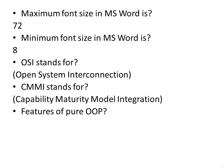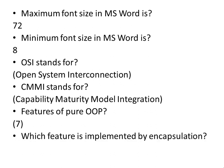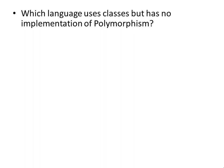Features of Pure OOP — there are 7 features of Pure OOP. Which feature is implemented by encapsulation? Abstraction. Which language uses classes but has no implementation of polymorphism? Ada language.